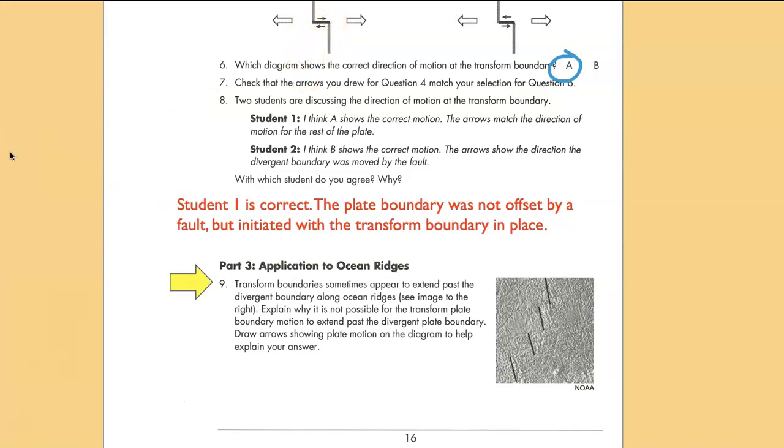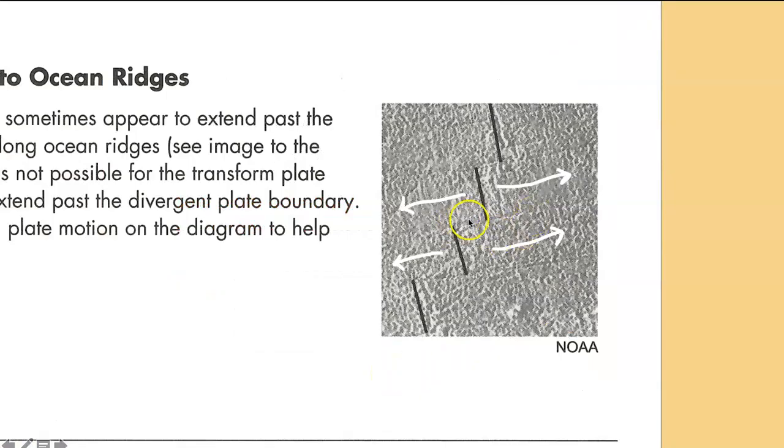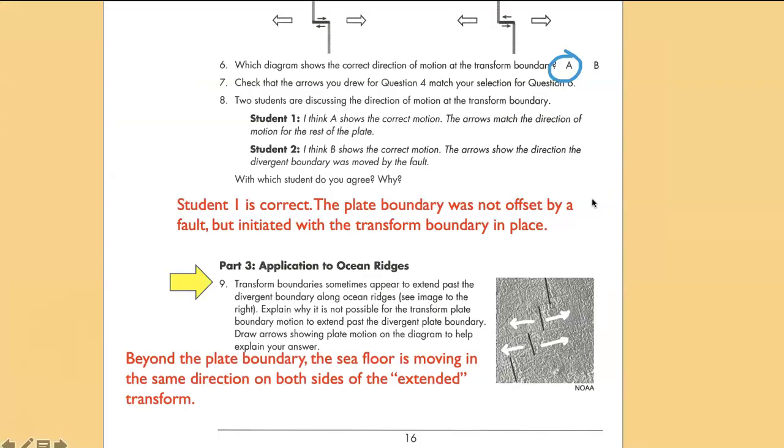Finally, sometimes you'll notice that these transform boundaries seem to appear beyond the edges of the divergent zone when we look at sea floor images. The divergent zones are in black, and I've shown with white arrows how things are moving. But let's take a closer look at that. Here are two divergent zones, and they're separated here by a transform zone, which I've colored red. If I put arrows on that, you'll see that there's motion across that zone. The top part's going to the left, and the bottom part's going to the right. But if we go out here, where that seems to continue, according to these large arrows, both sides are going to the right. So there's no motion across them. So beyond the plate boundary, the sea floor is moving in the same direction on both sides of that extended portion of the transform.